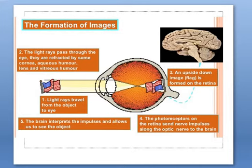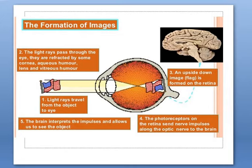Image formation occurs in five steps. First, light rays travel from the object to the eye. Second, the light rays pass through the cornea, aqueous humor, lens, and vitreous humor. Third, an upside-down image is formed on the retina. Fourth, the photoreceptors on the retina send nerve impulses along the optic nerve to the brain. Fifth, the brain interprets the impulses and allows us to see the object.